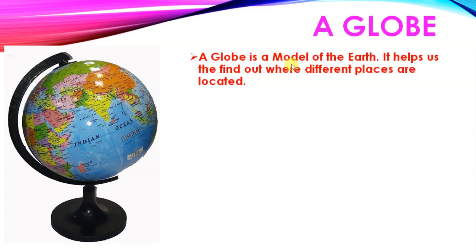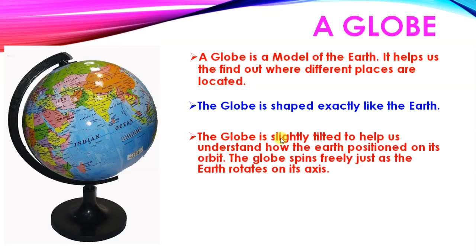A globe: A globe is a model of the earth. It helps us to find out where different places are located. It helps us to find places. India is there, China is there. The globe is shaped exactly like the earth. The globe is slightly tilted to help us understand how the earth is positioned on its orbit.